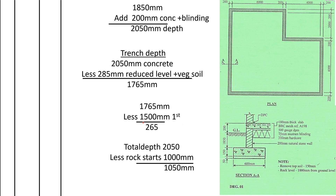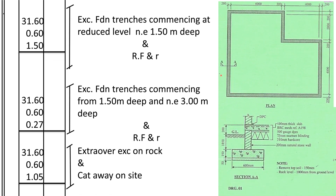We excavate in ranges of 1.5 meters. So the first stage you shall excavate 1.5 meters, and the second stage you shall excavate the remainder, which is 265 millimeters. Then we are told the rock level is 1,000 millimeters from the ground. Since the total depth from the ground level to below the foundation is 2,050, and the rock starts 1,000 from the ground level, the depth we shall excavate in rock shall be 2,050 minus 1,000, which gives us 1,050 millimeters.